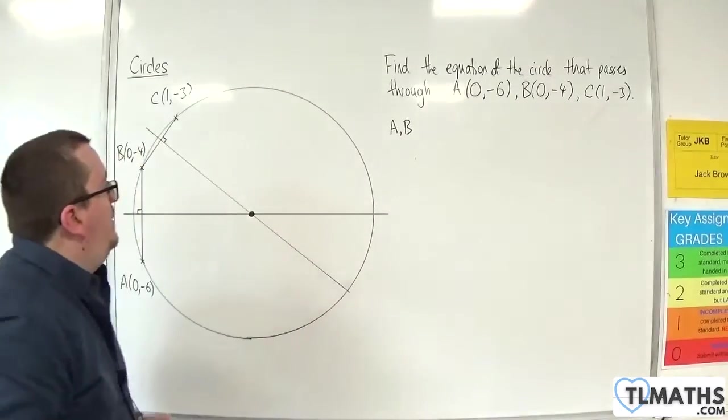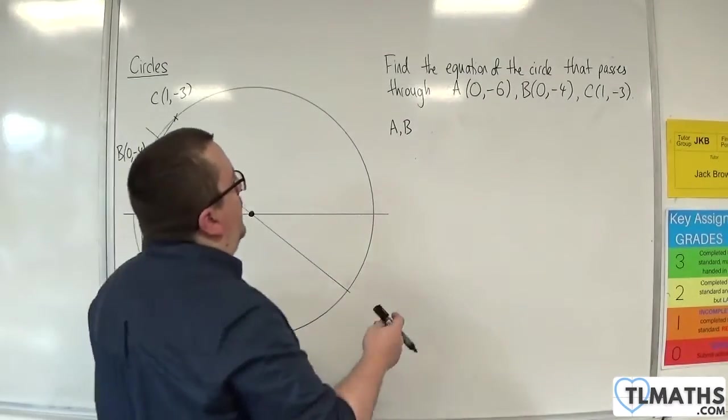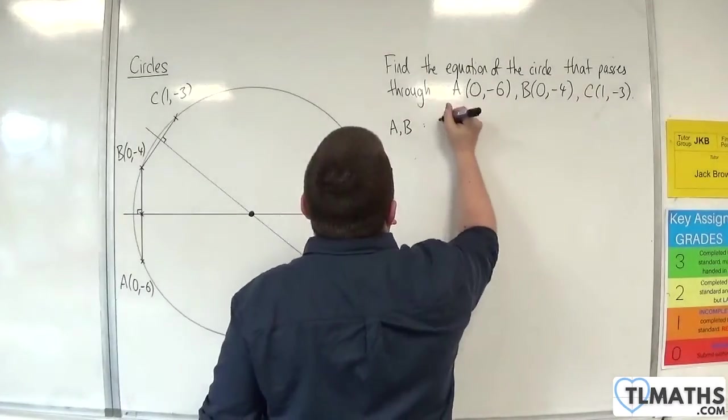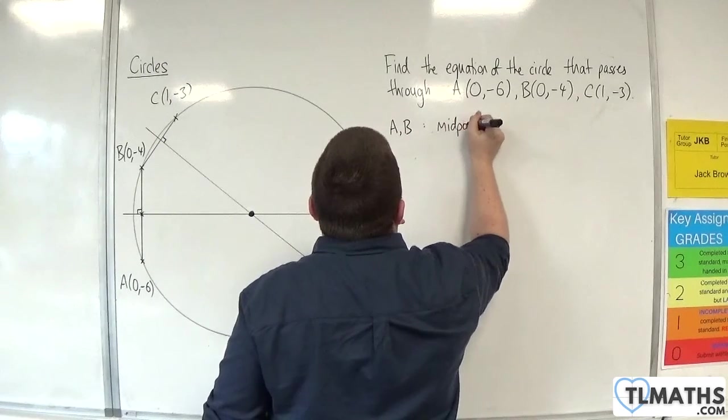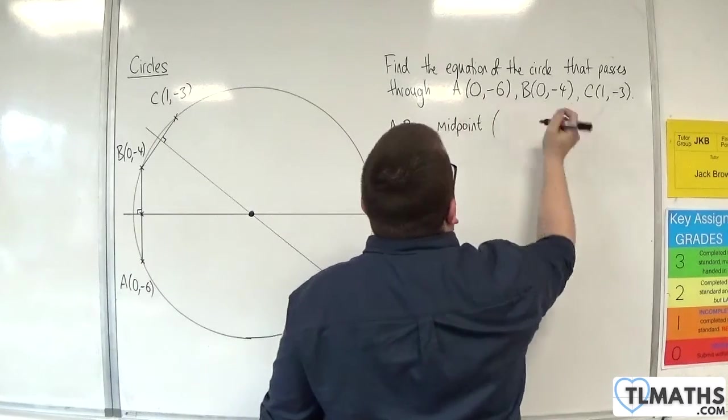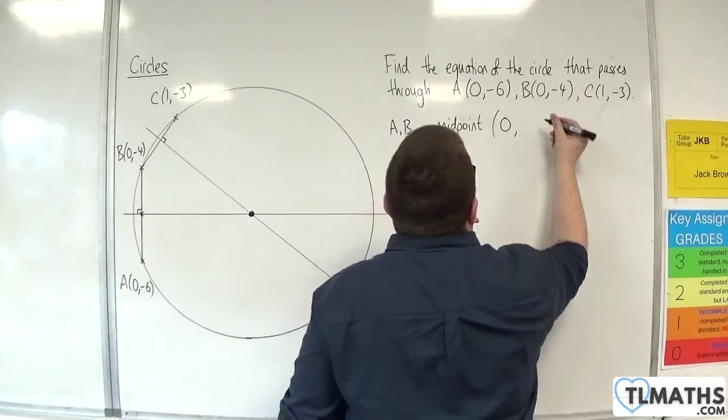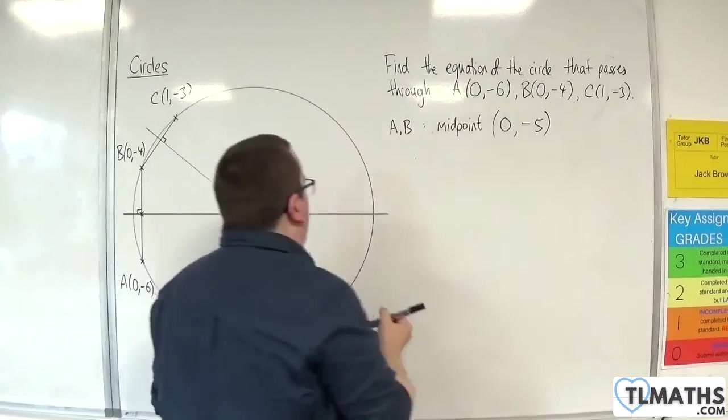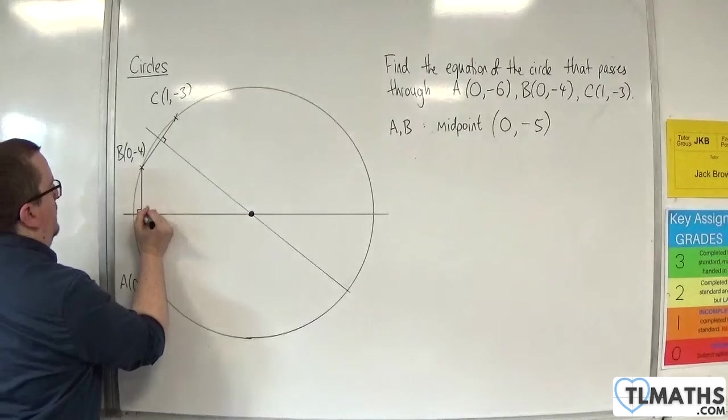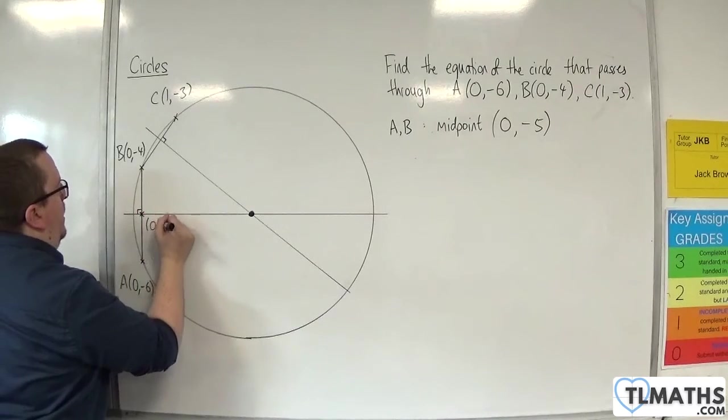So let's work with A and B first. So first of all, find the midpoint of AB. So midpoint: 0 plus 0 divided by 2 is 0. -6 plus -4 divided by 2 will be -5, of course. So this point here is going to be (0, -5).